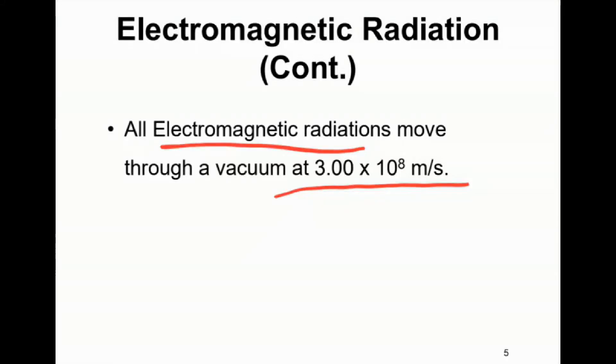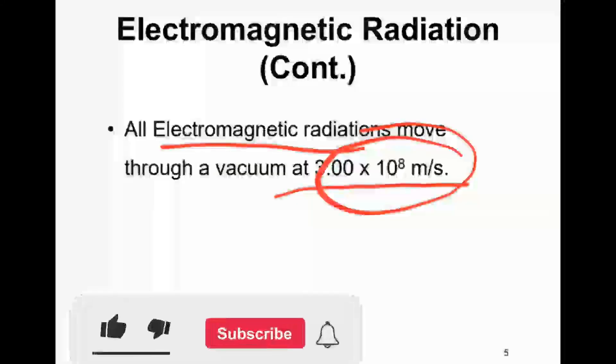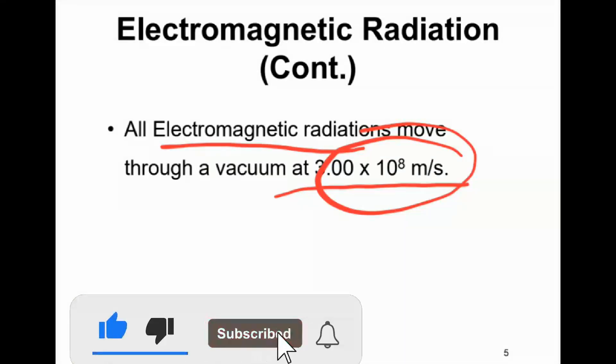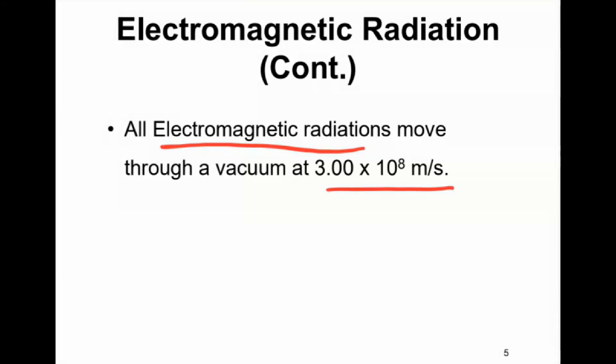This number, 3 times 10 to the power of 8, is commonly known as the speed of light. This means that red light and blue light travel at the same speed.